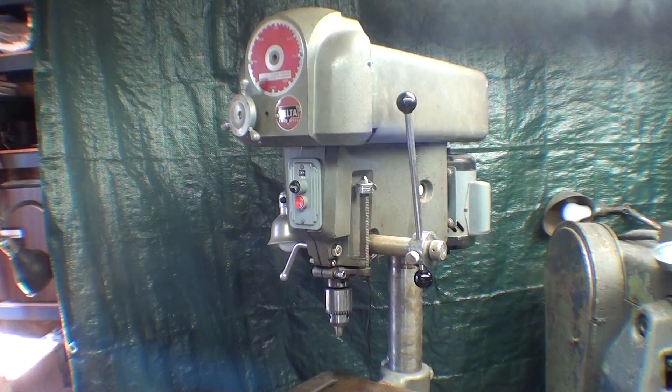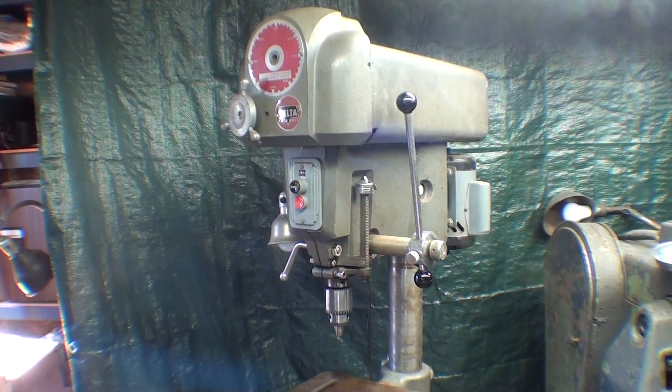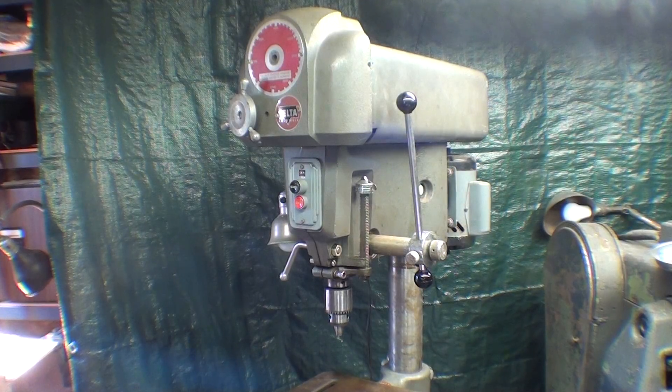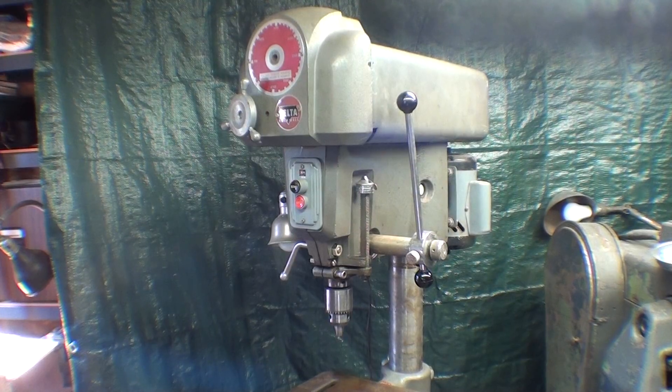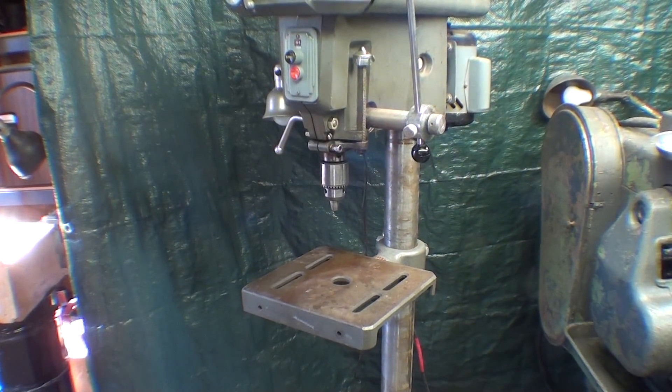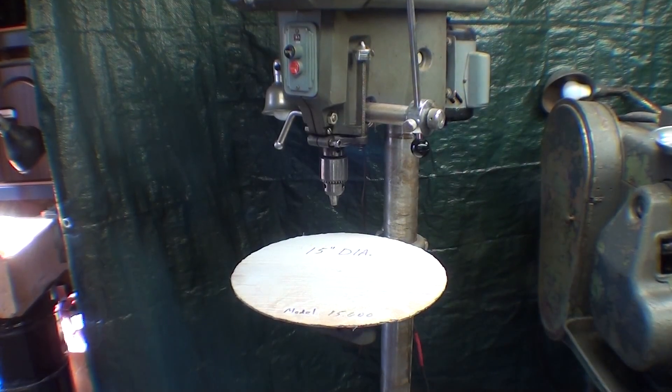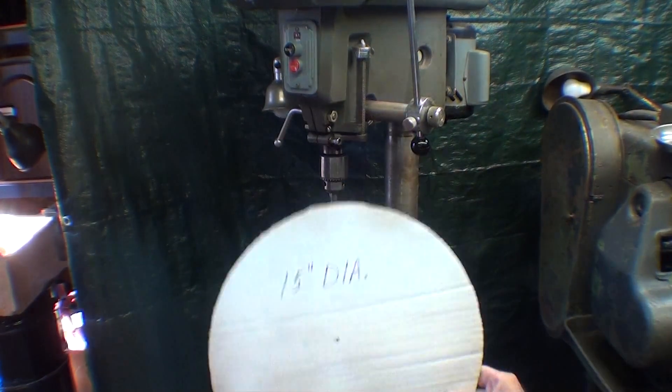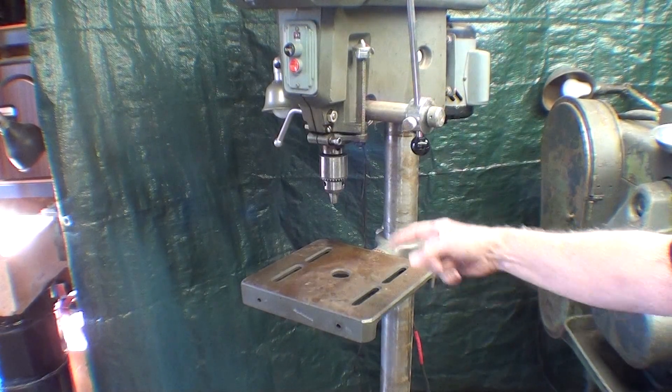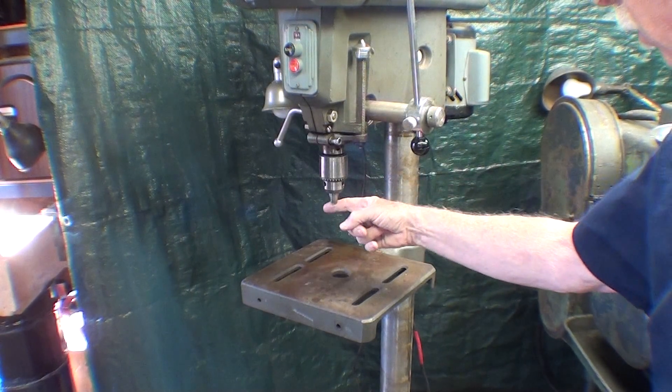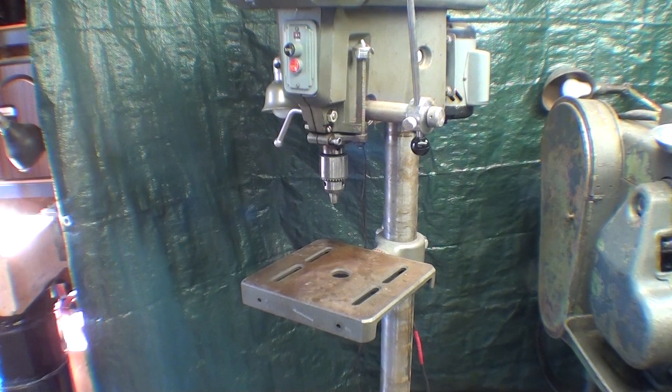The purpose of this video is to examine it and give you an analysis of what I bought here. It's a 15-inch, which means it has a reach and can drill to the center of a 15-inch disk, or in other words, it has a 7.5-inch throw. That's how they determine the size on some of these drill presses.